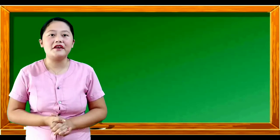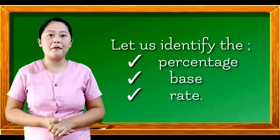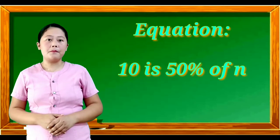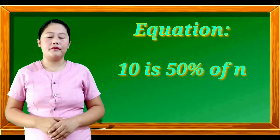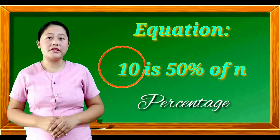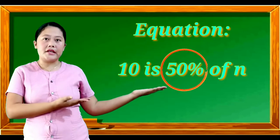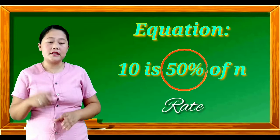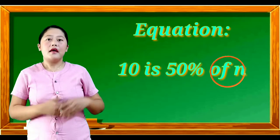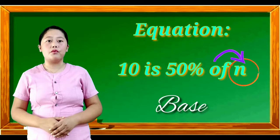Let's have another equation. Let us identify the percentage, base, and rate. Here is the equation: 10 is 50% of N. 10 here is our percentage because it comes before the word 'is'. 50% is our rate because the number has percent symbol. And N is our base because it comes after the word 'of'.